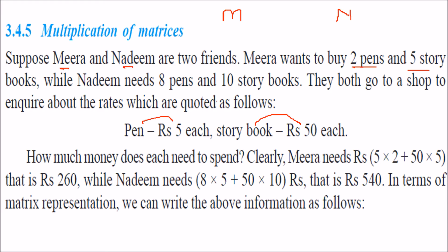How much money does each spend? For Meera: five into two plus fifty into five gives 260 rupees. For Nadeem: eight into five plus ten into fifty gives 540 rupees.